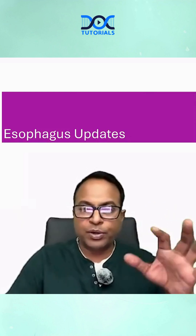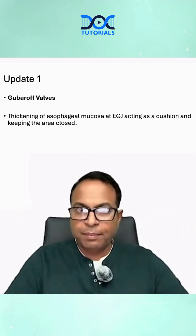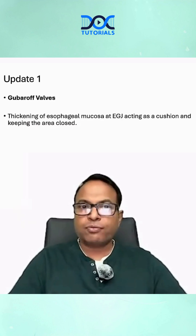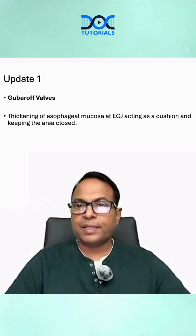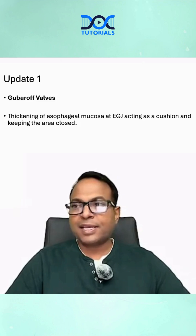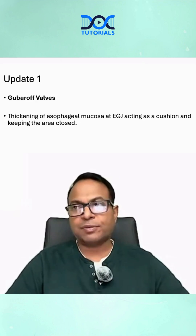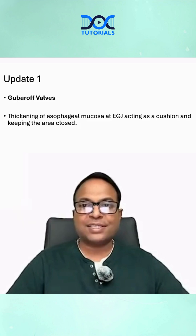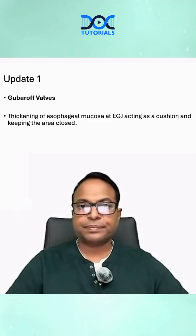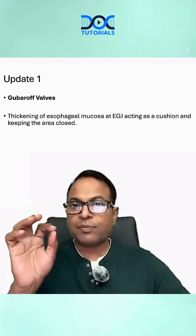A new name has been added in the 22nd edition: Guber of Wall. Guber of Wall is a thickening of the esophageal mucosa at the esophageal-gastric junction, acting as a cushion and keeping the area closed. Please remember — Guber of Wall is the thickened mucosa at the esophageal-gastric junction.